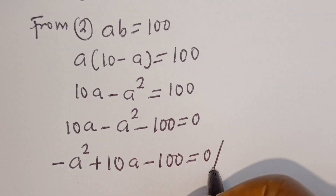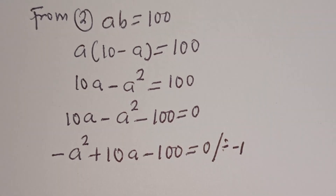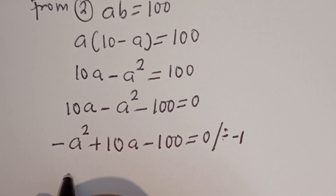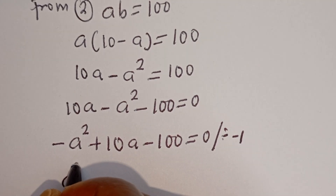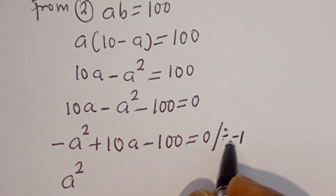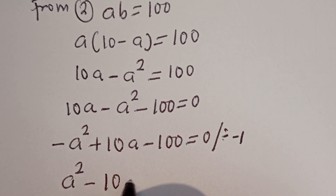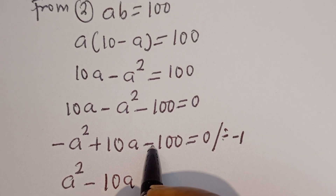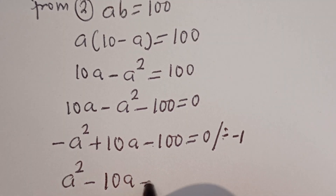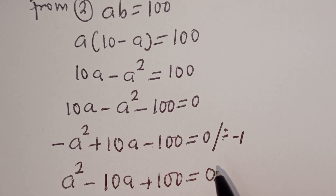Let's divide all through by minus 1. Minus a squared divided by minus 1 gives a squared. Then plus 10a divided by minus 1 gives minus 10a. Then minus 100 divided by minus 1 gives plus 100, equal to 0.